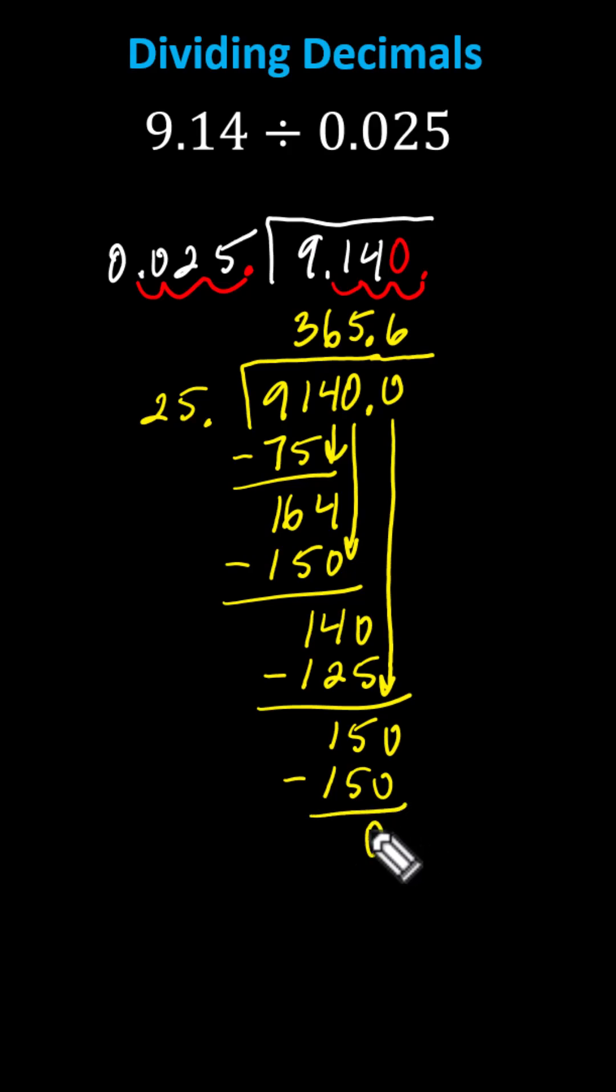This quotient is equivalent to the original quotient, meaning we now know 9 and 14 hundredths divided by 25 thousandths is equal to 365 and 6 tenths. I hope you found this helpful.